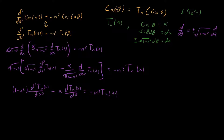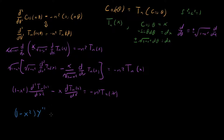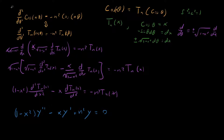Here we've derived a differential equation satisfied by our Chebyshev polynomial of the first kind. Just to make things nicer, when you see this differential equation in the wild it's written as: one-minus-x-squared times y-double-prime minus x times y-prime plus n-squared y equals zero. If we see this differential equation in the wild, we know the solution is our Chebyshev polynomial of the first kind.